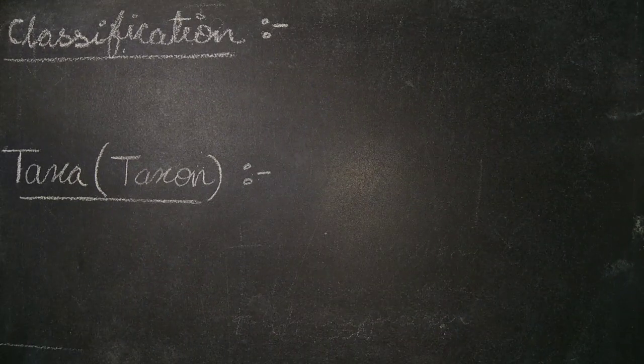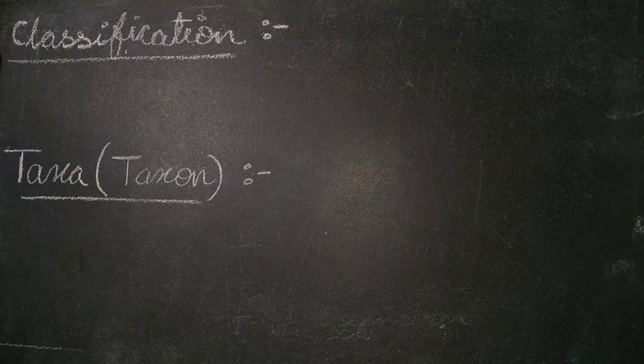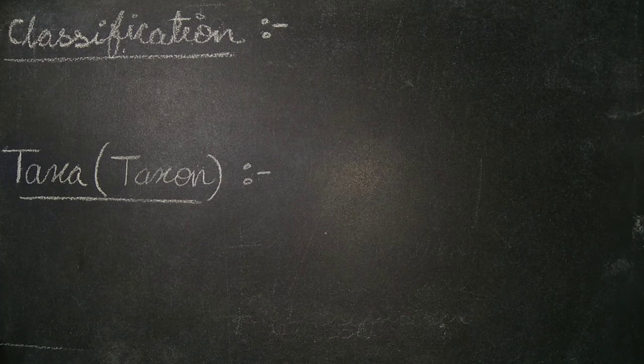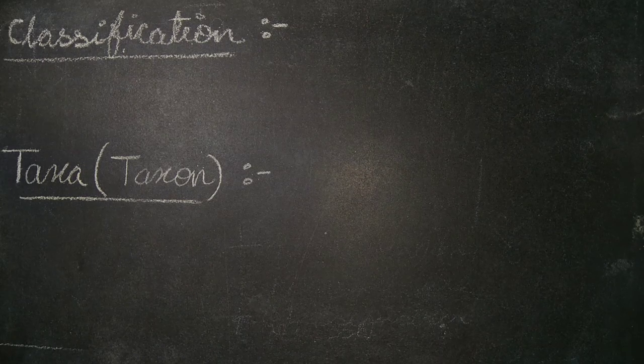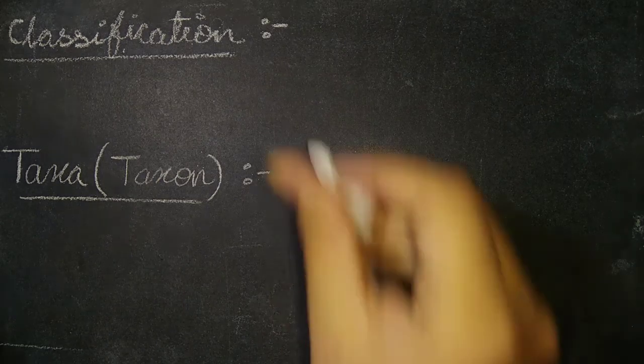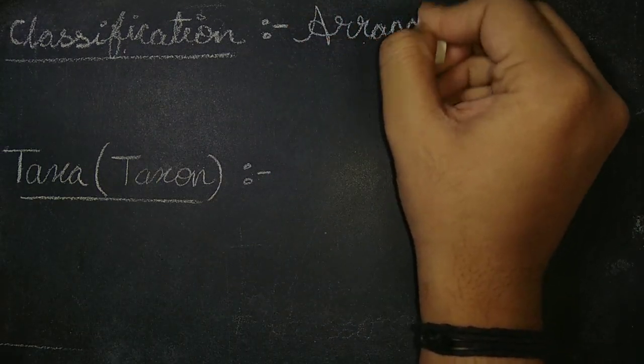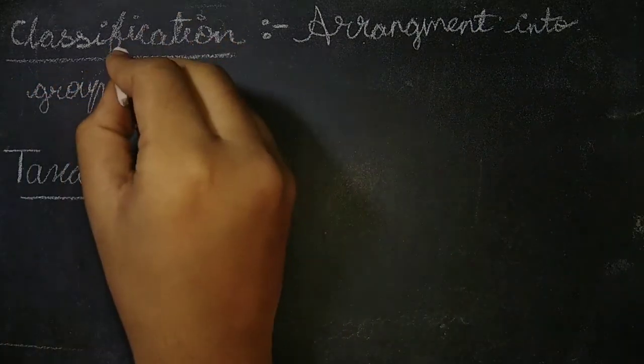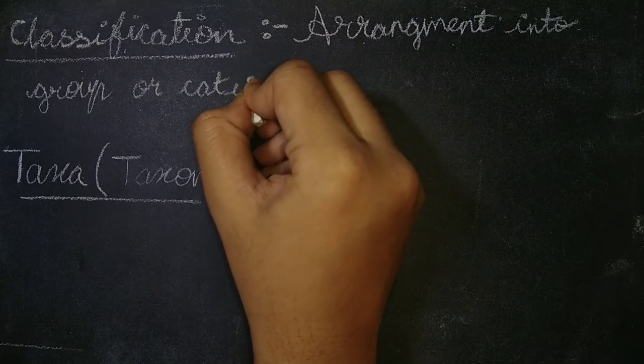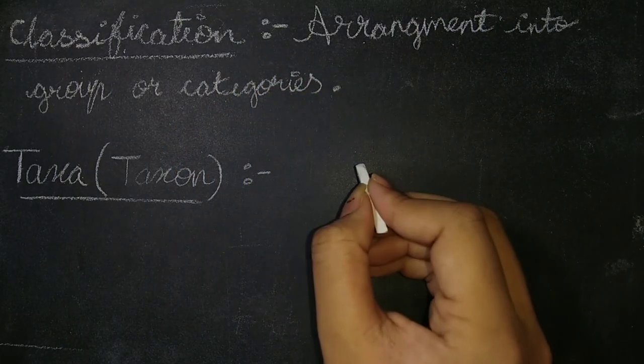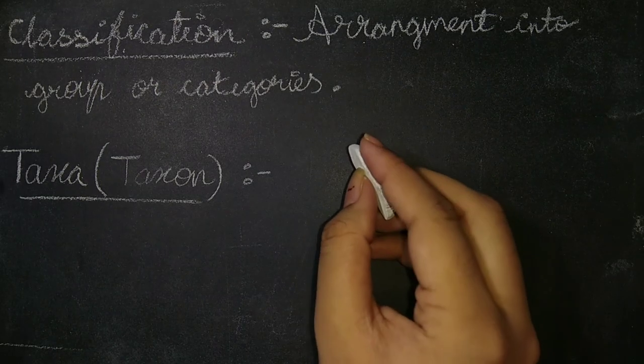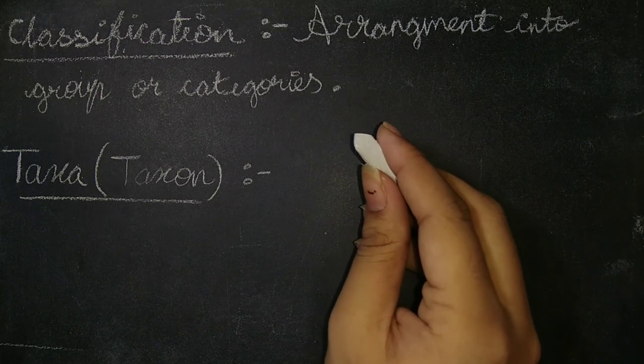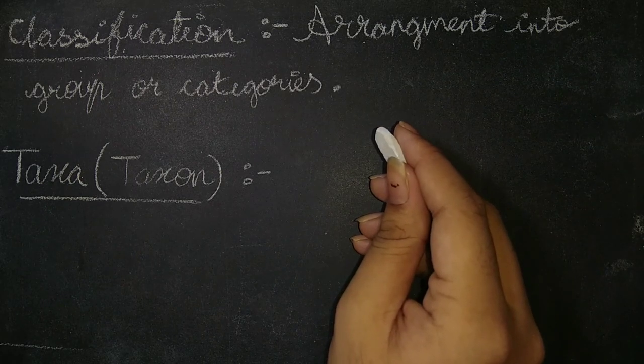Now let us discuss some of the definitions. First is classification. Classification means it is simple arrangement of an organism into groups or categories. Here we can just arrange the organism and place it in a group or category. In this group of organisms, they are recognized in a classification and are given a scientific name or biological name, for example Cyprinidae.